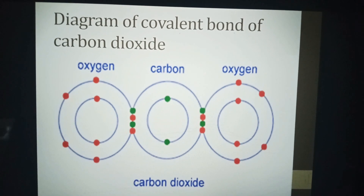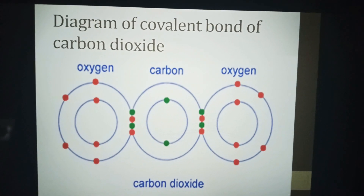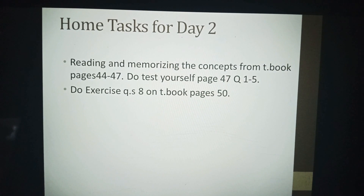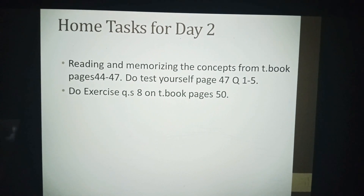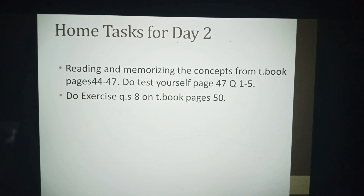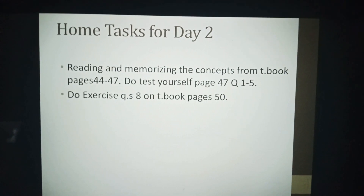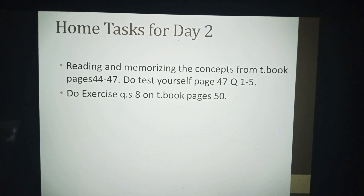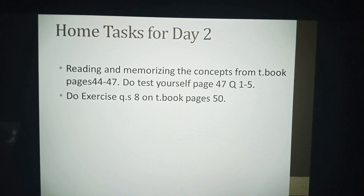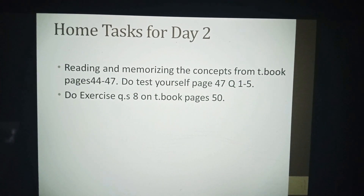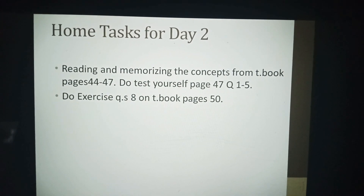Here is the diagram of the covalent bond of carbon dioxide, and you have to make this diagram on your loose sheets. For Day Two home tasks: you have to read and memorize the concepts from textbook pages 44 to 47, do 'Test Yourself' page 47 questions one to five, and do exercise question number eight on textbook page 50.